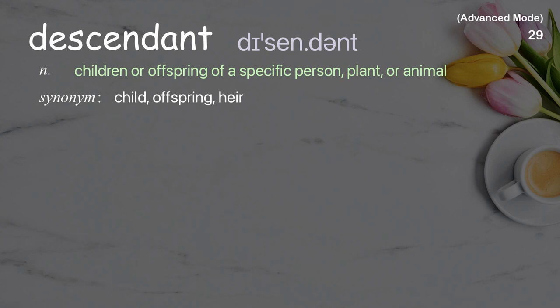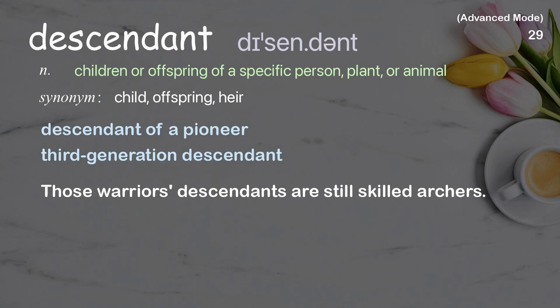Descendant: Children or offspring of a specific person, plant, or animal. Examples: Descendant of a pioneer, Third generation descendant. Those warriors' descendants are still skilled archers.